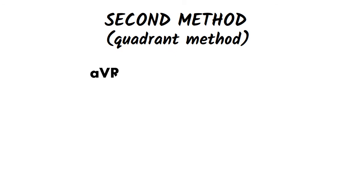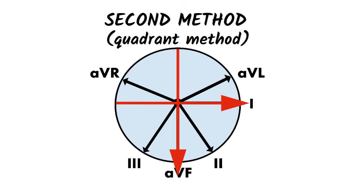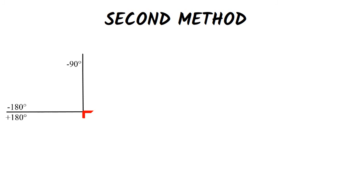The second method is a quicker method and it is called the quadrant method. We will look at lead 1 and lead AVF and determine whether the QRS complex in each lead is positive or negative, so we don't have to know the exact value of the QRS complex.